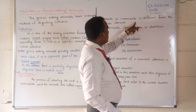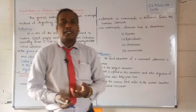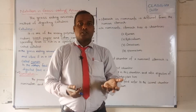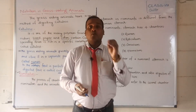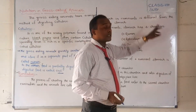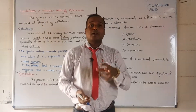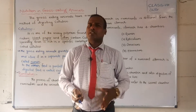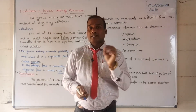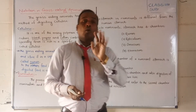The stomach of ruminants is different from the human stomach. In ruminants like grass-eating animals, the stomach has four chambers. Our stomach has only one chamber, but in ruminants the stomach has four chambers.